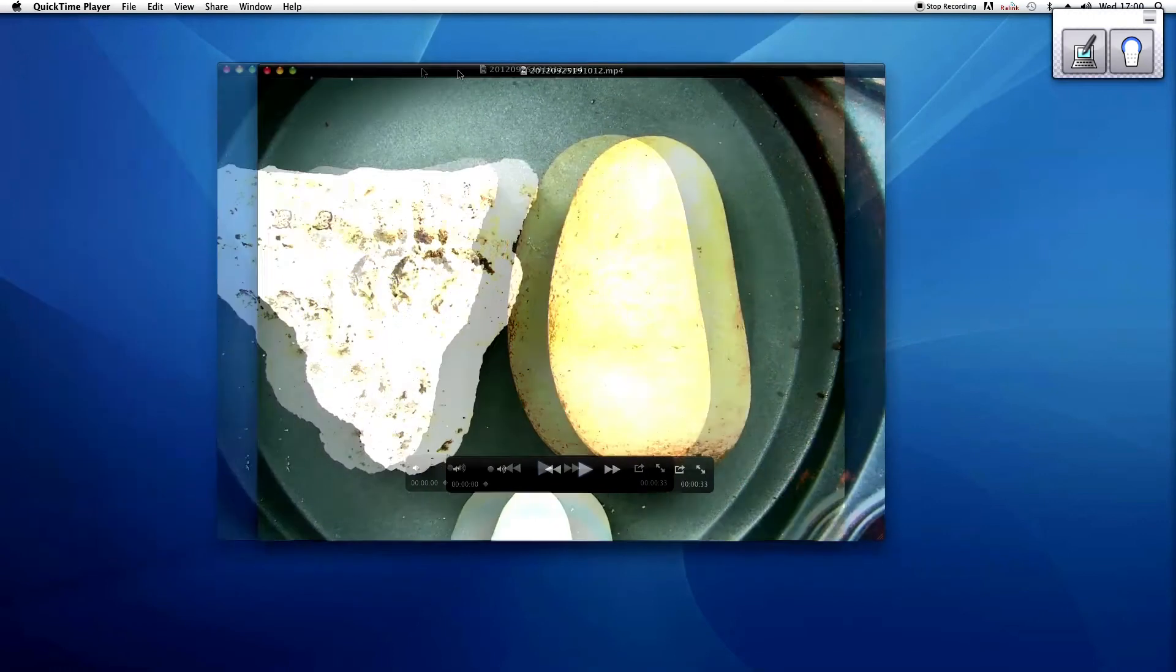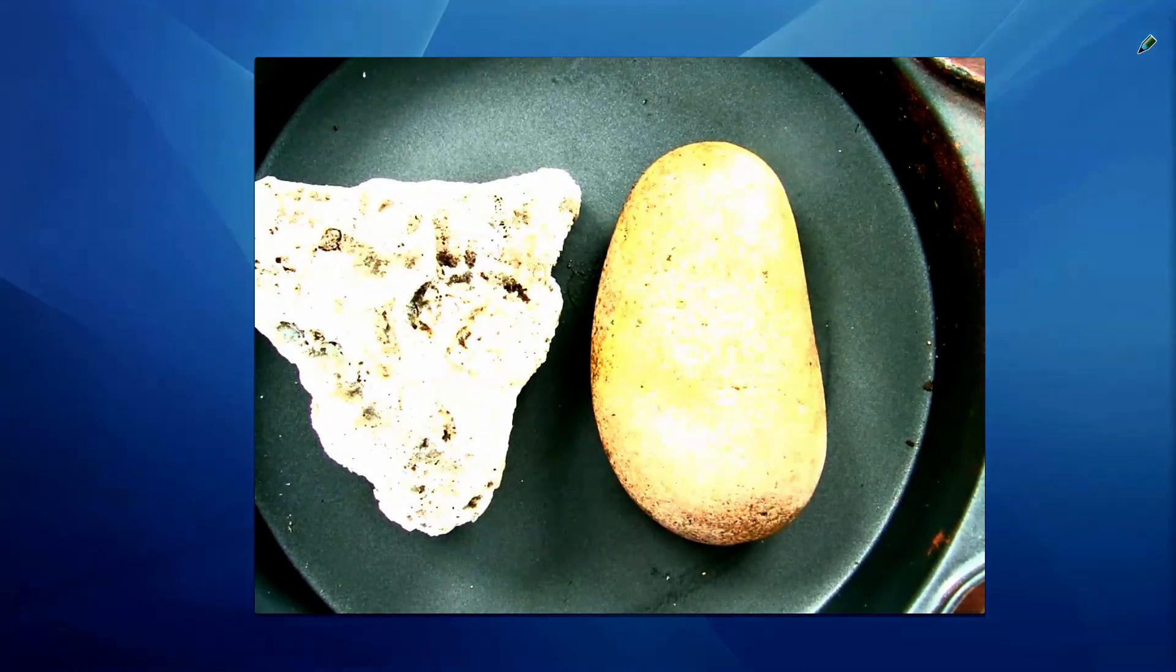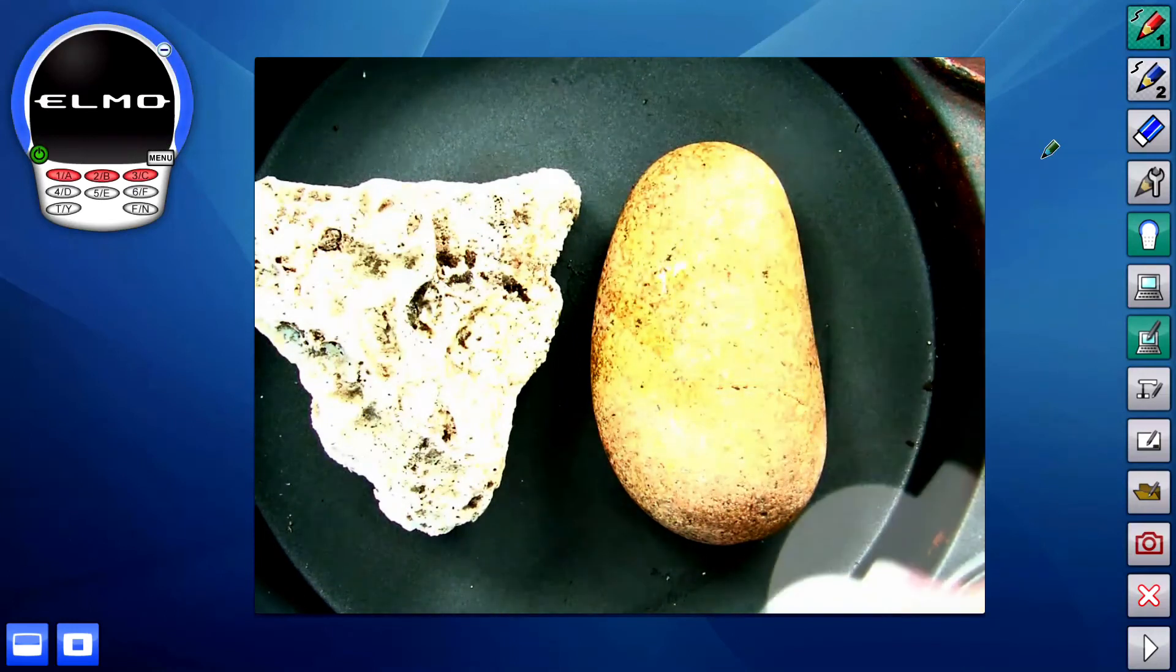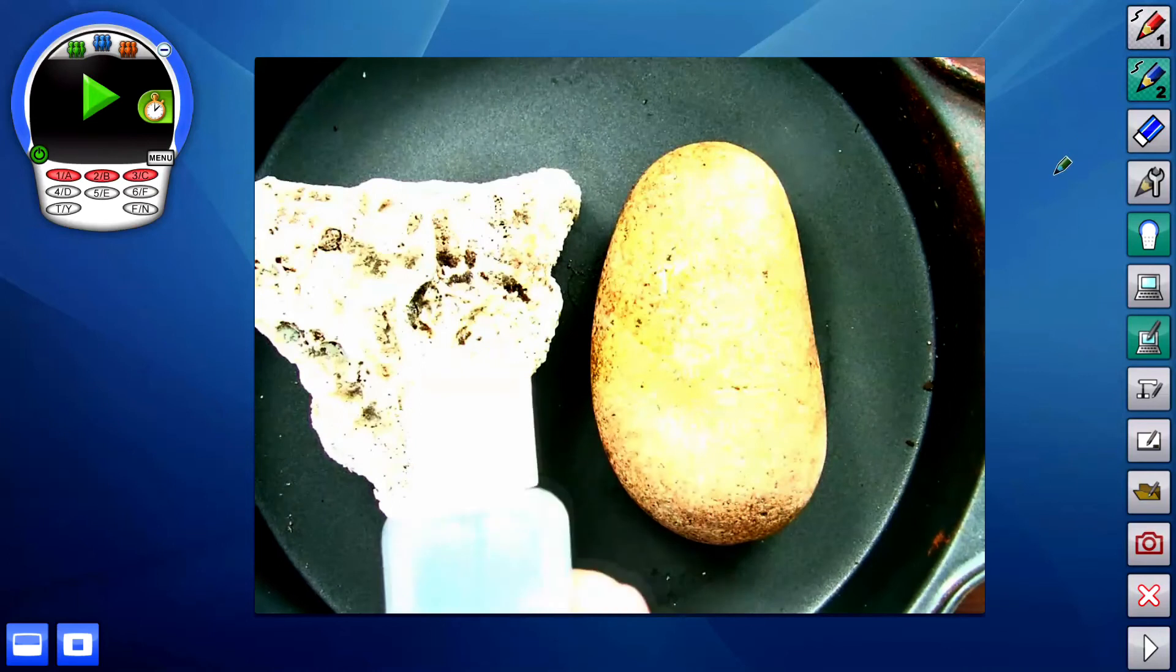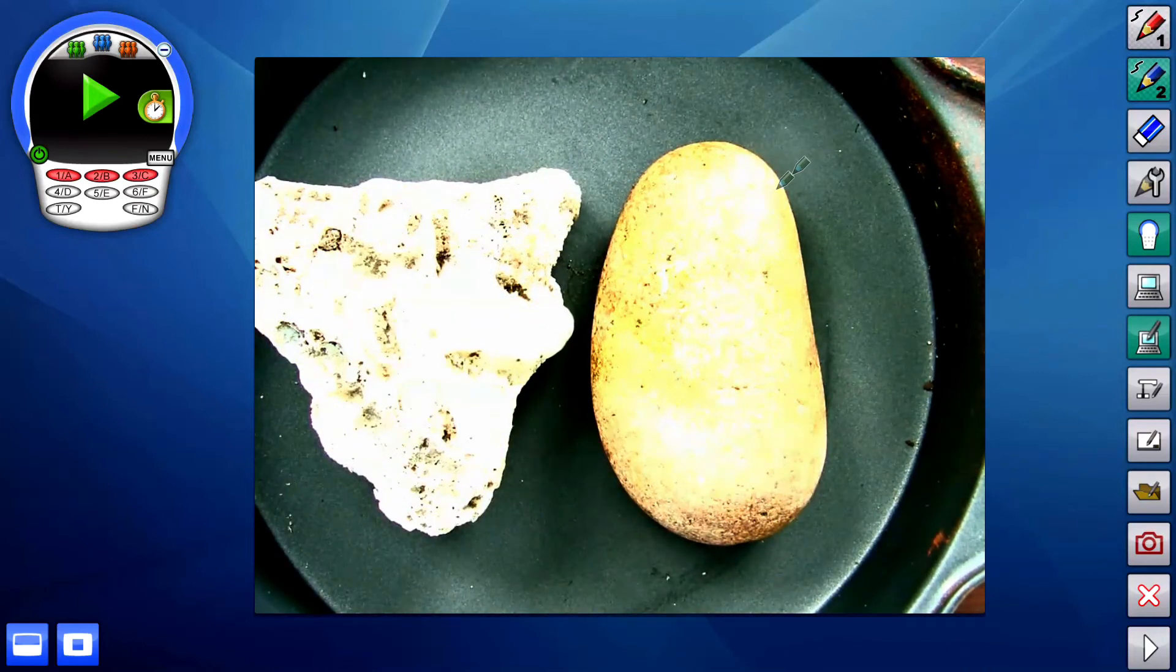And now, when I click on the icon in the upper right-hand corner, I can annotate, and I can say, this is what happens when you add a little bit of hydrochloric acid to granite rock and calcium carbonate.